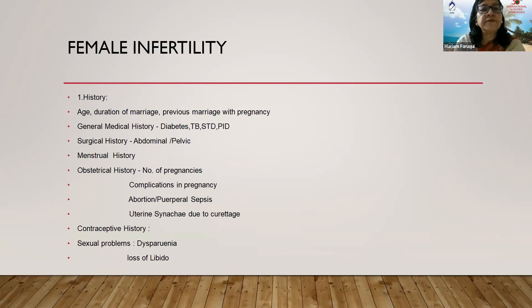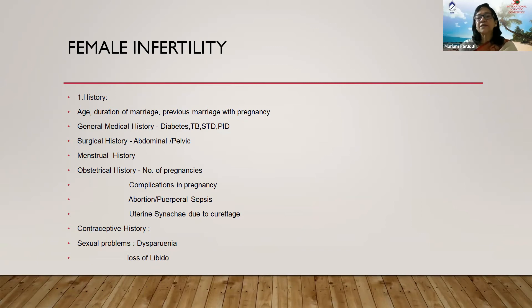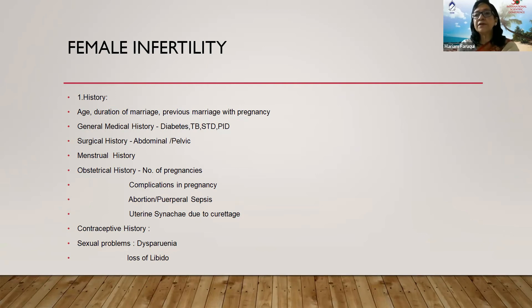For female infertility, we keep separate history sheets. Age is very important — as age advances, both the quality and quantity of eggs deteriorate, making pregnancy difficult for older women.